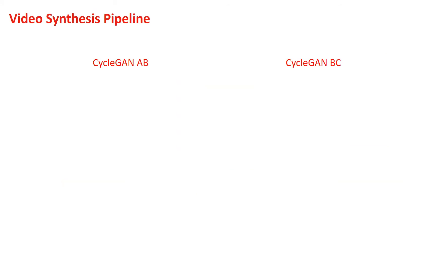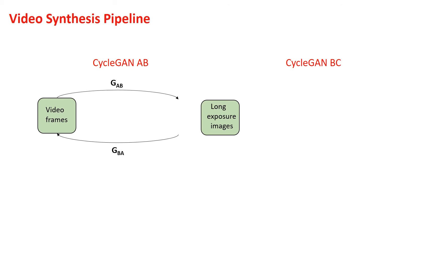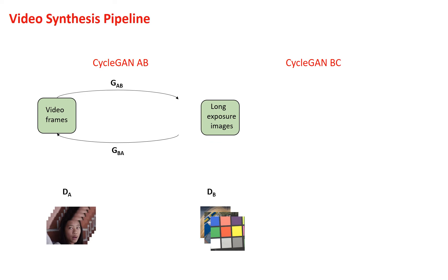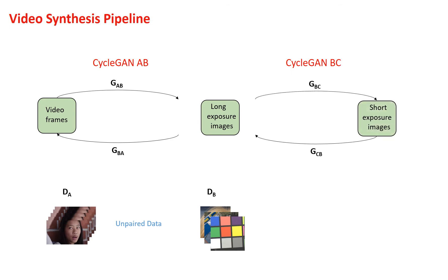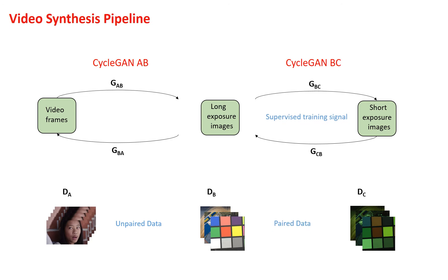We model our video synthesis pipeline as a set of two cycle GANs in a dual configuration. The first cycle GAN learns an unpaired mapping between domains A and B, transforming a set of RGB videos to a long exposure sensor-specific domain. Since there is no paired relationship between these two domains, the first cycle GAN works in a fully unsupervised manner. The second cycle GAN learns a paired mapping between the long and short exposure domains of a specific sensor, helping to bridge the gap between distributions A and C by using additional supervised information in the optimization objective.